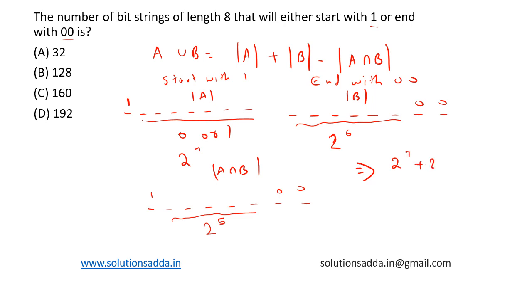So the final result will be 2 to the power 7 plus 2 to the power 6 minus 2 to the power 5. This is equal to 128 plus 64 minus 32, which is equal to 160. So the total number of strings of length 8 that will either start with 1 or end with 00 is option C: 160.